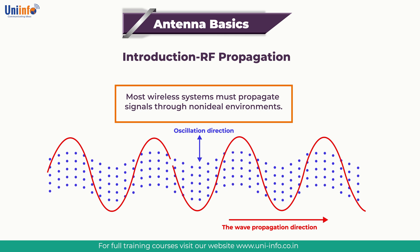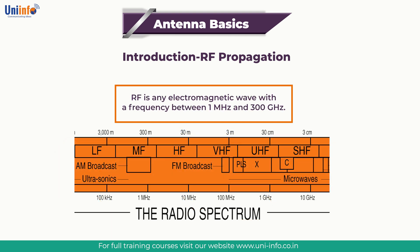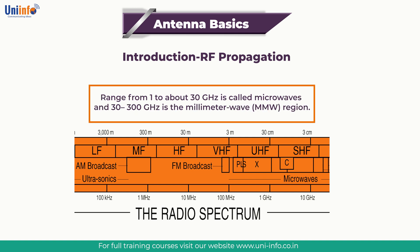While the basics of free space propagation are consistent for all frequencies, the nuances of real-world channels often show considerable sensitivity to frequency. The concerns and models of propagation will therefore be heavily dependent upon the frequency in question. RF is an electromagnetic wave with a frequency between 1 MHz and 300 GHz. Common industry definitions have RF ranging from 1 MHz to about 1 GHz, while 1 to about 30 GHz is called microwaves, and 30 to 300 GHz is the millimeter wave range.